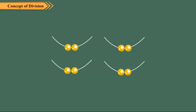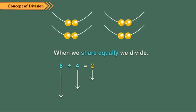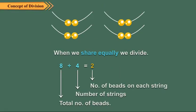Now we have two beads in each string. Children, in equal sharing you know how many groups are there and can find how many in each group.